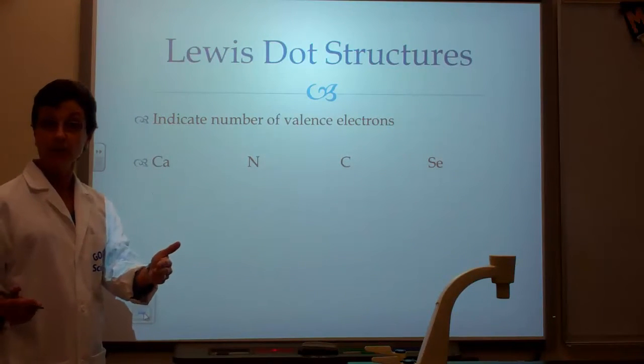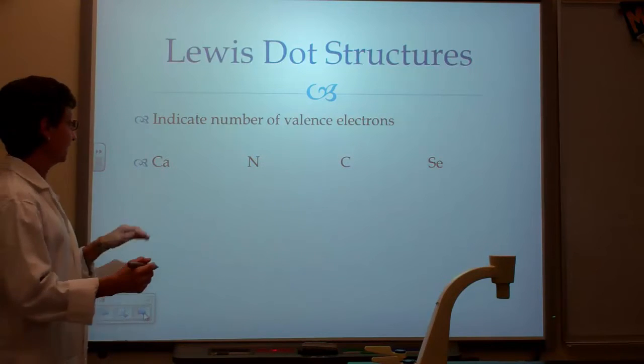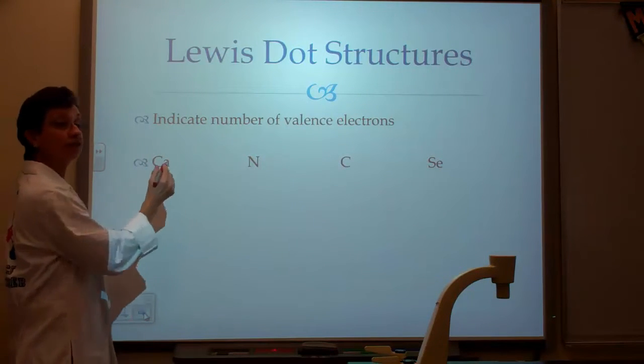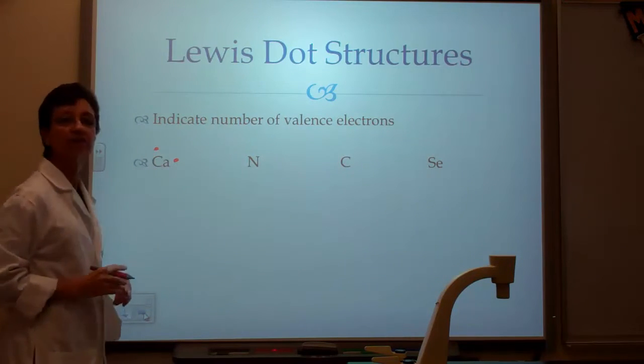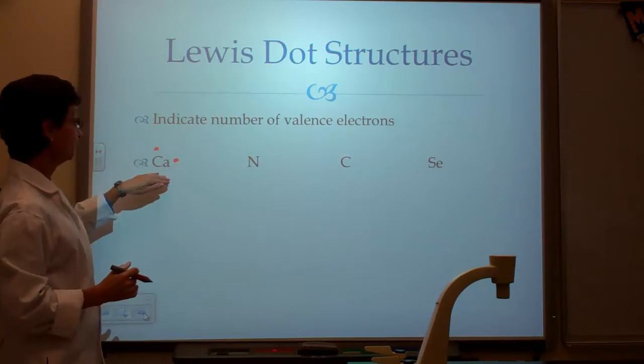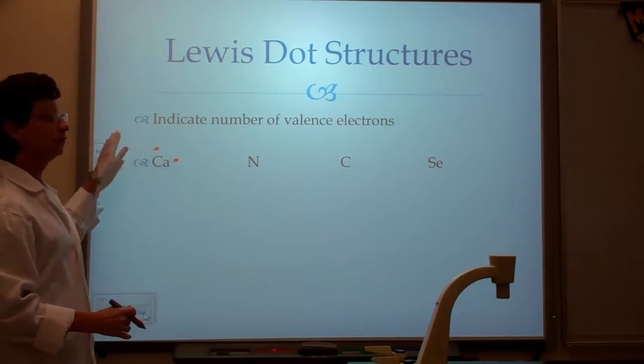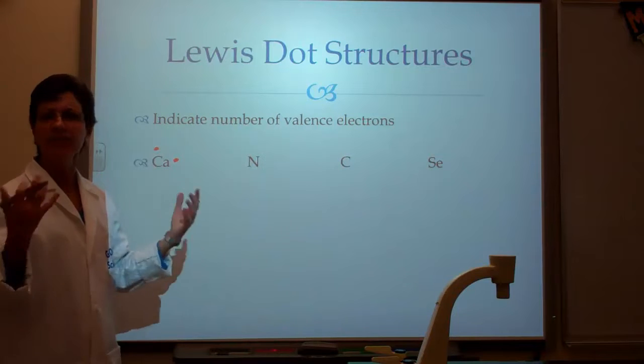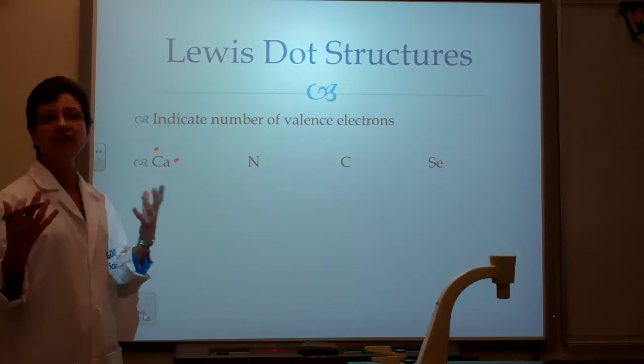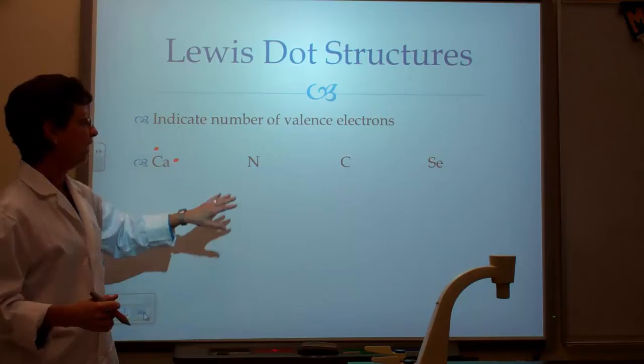Calcium is an alkaline earth metal. It is in the second group. Therefore, it has two valence electrons. Since it has two valence electrons, I'm going to put the two valence electrons right there. Notice that I'm going to start on the right-hand side and go counter-clockwise. Many books do it different ways. It really doesn't matter. Later on when we start putting these together, it's going to be a little different every time.